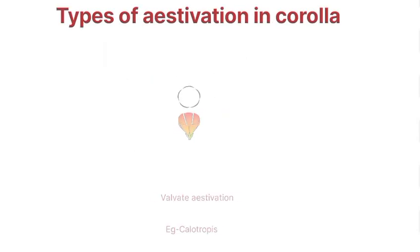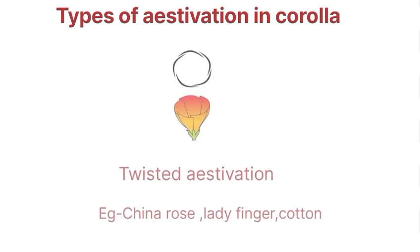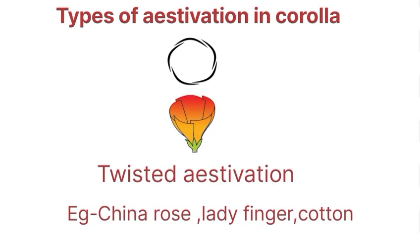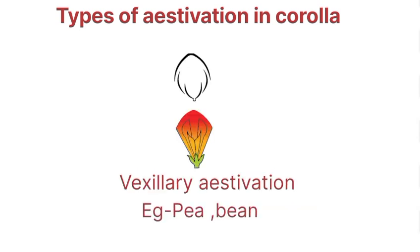Types of aestivation in corolla: first is valvate aestivation — example is Calotropis. Next is twisted aestivation — examples are china rose, ladyfinger, cotton. Next is imbricate aestivation — examples are Cassia and Gulmohar. Next is vexillary aestivation — example is pea.